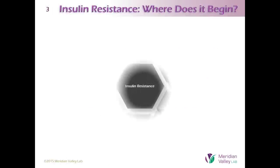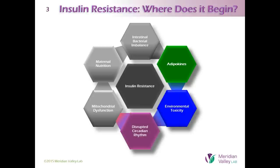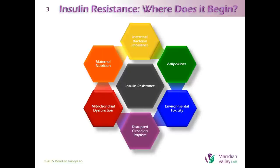I first want to return to a couple of Dr. Kaplan's slides from Part 1. He touched on six factors that can disrupt insulin response, any one of which may play a role in initiating the development of insulin resistance: the contribution of adipokines or cytokines released from adipose tissue, the role of environmental toxins, disruptions in sleep patterns, mitochondrial damage and dysfunction, the impact of maternal nutrition when the patient was in utero, and the effects of healthy or imbalanced gut bacteria on insulin and blood sugar regulation.